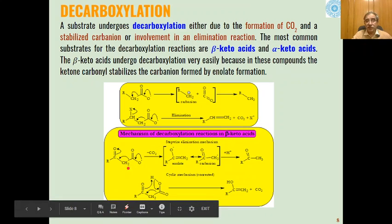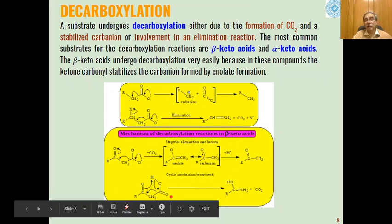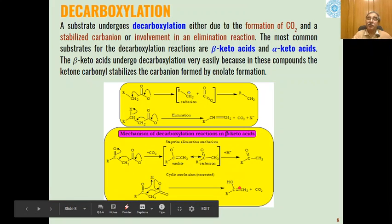The mechanism in the case of beta-ketoacids: in the first step, carbon dioxide is removed to give an enolate. This enolate is in equilibrium with a carbanion which will abstract a proton from the active site of the enzyme, giving a stable product in addition to removal of carbon dioxide. Alternatively, a cyclic concerted mechanism can also occur, wherein the beta-ketoacid transfers the proton to the oxygen with elimination of carbon dioxide, giving enols as the product, which then convert into more stable ketone forms.